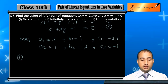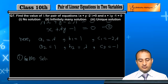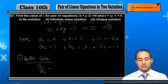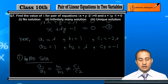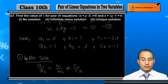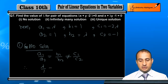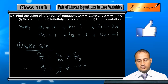For no solution, the condition is: a1 upon a2 equals b1 upon b2, but not equal to c1 upon c2. Therefore, lambda upon 1 equals 1 upon lambda, but is not equal to minus 2 lambda upon minus 1.